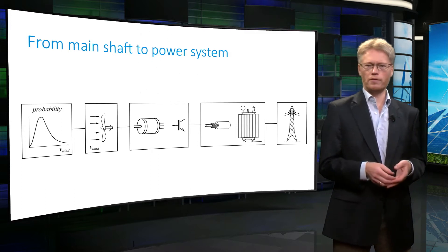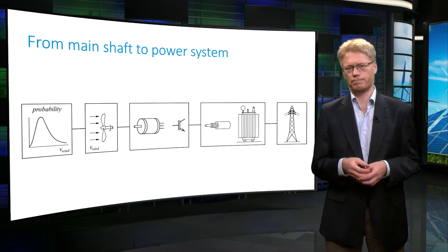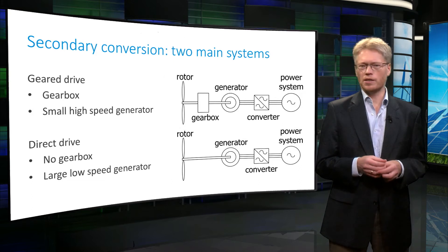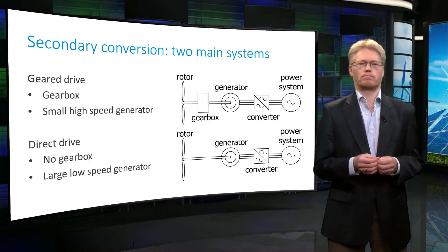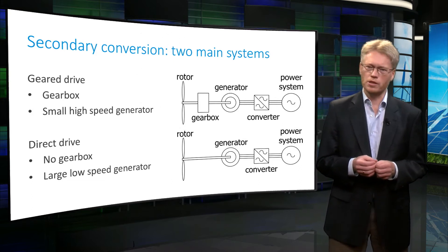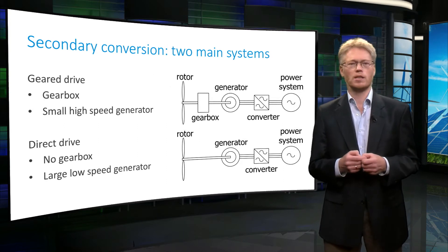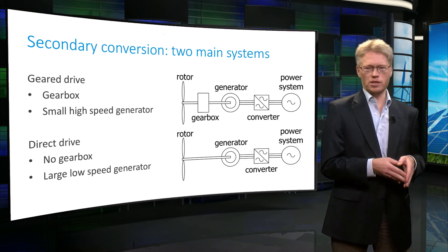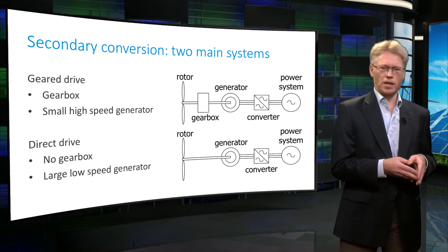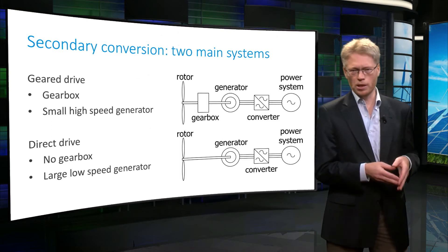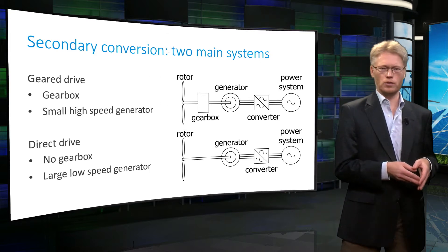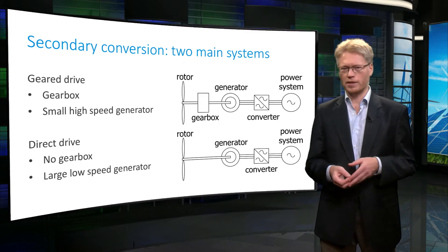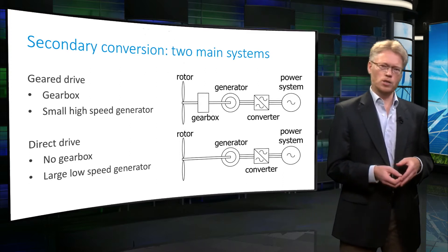First we will have a look at the generator system. In wind turbines, different generator systems are applied. The most important difference is between geared drive systems and direct drive systems. In geared drive systems, the mechanical speed of the main shaft is increased by a gearbox to a speed of roughly 1500 rotations per minute, and then a high speed compact generator converts the mechanical power into electrical power.